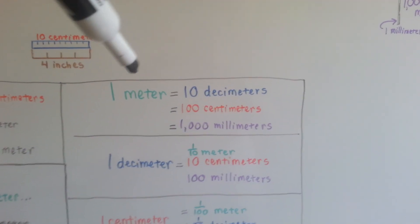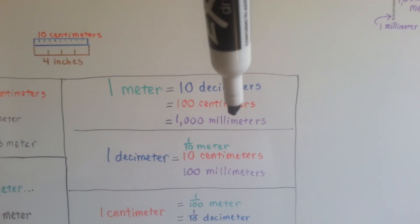One meter is ten decimeters. It's also a hundred centimeters and a thousand millimeters.